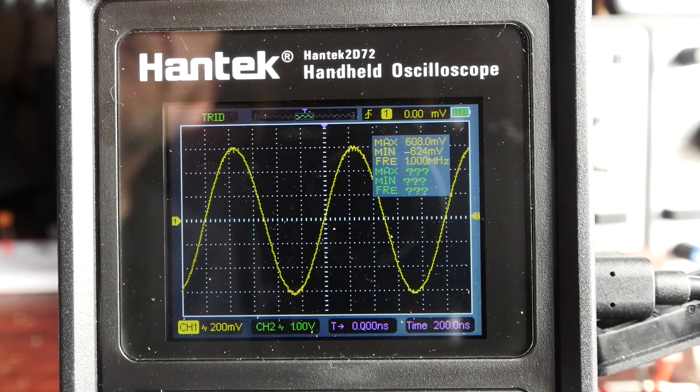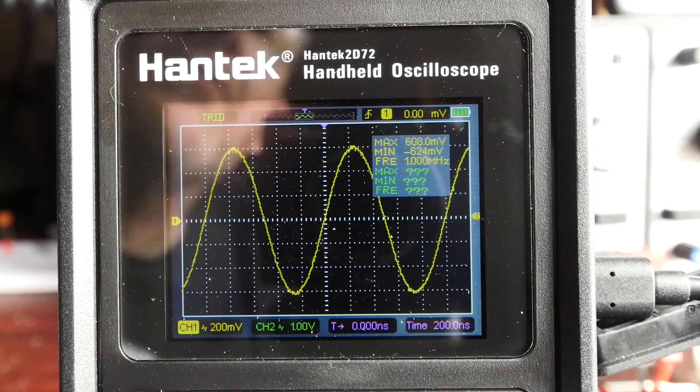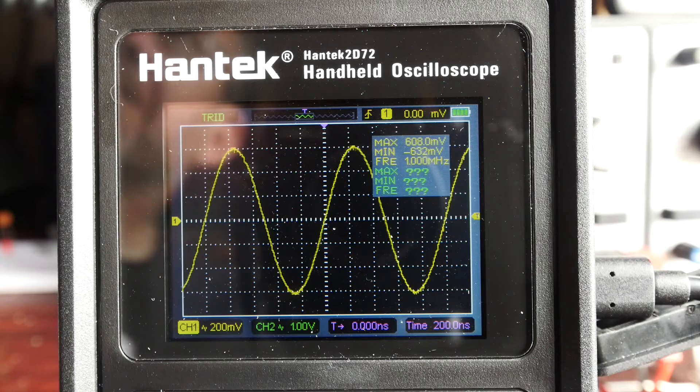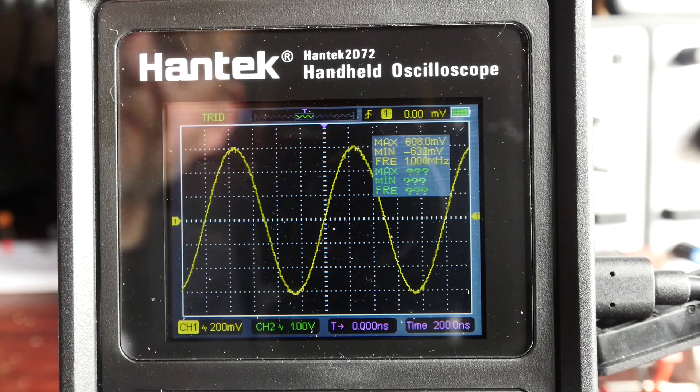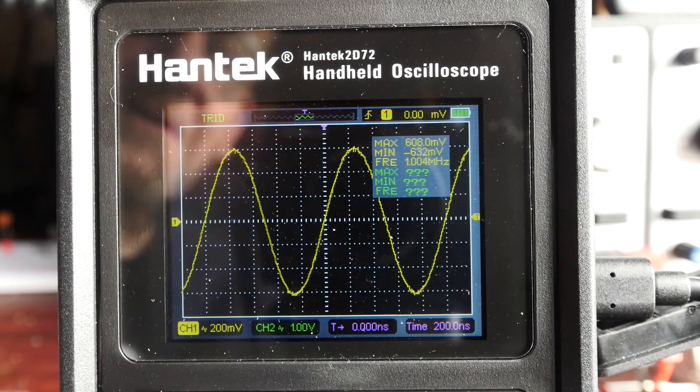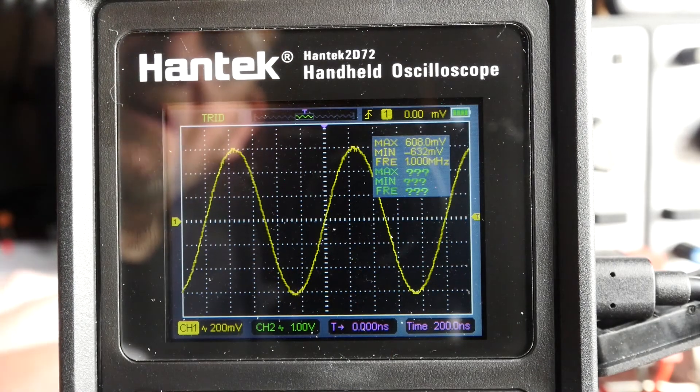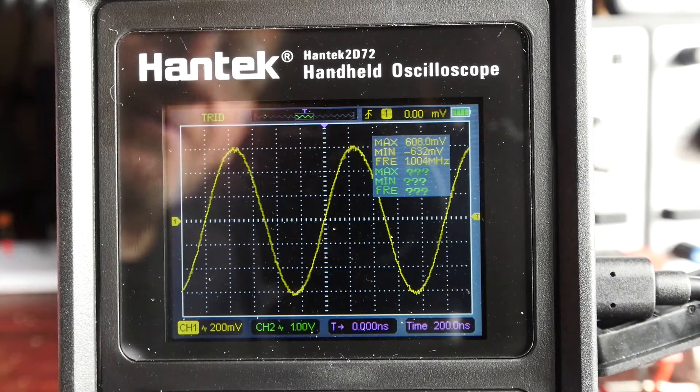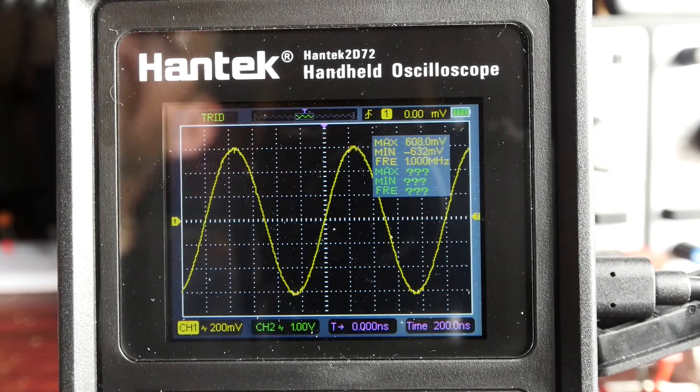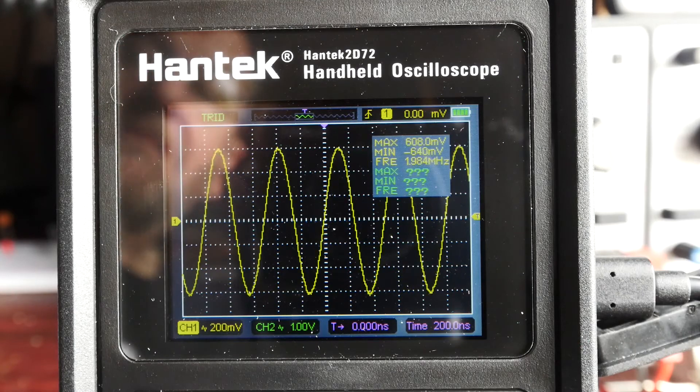Okay, here we are with the Hantek 2D72 now attached to my digital function generator, currently displaying a signal of one megahertz. I've arranged the output voltage to cover about three divisions on the display. This is my crude method of trying to estimate bandwidth. Each division responds to about 33% of the total signal. When we get down to just above two divisions, we're roughly at the 3dB down point. We're on 200 millivolts per division, so I'm going to wind the frequency up in one megahertz steps.